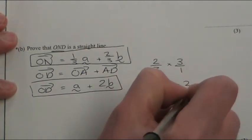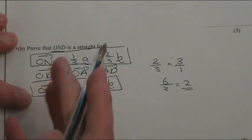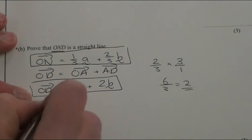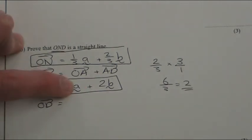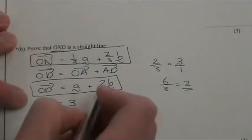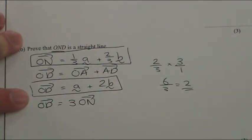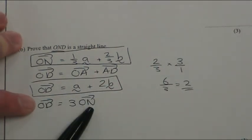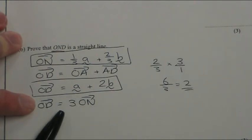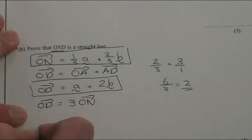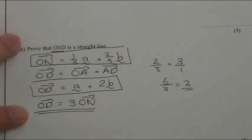So six divided by three which is two. Which means OD, so you can see this vector here is three times bigger than ON. It means it's exactly the same vector but just three of them. Therefore it's in a straight line and that's what they want to see.